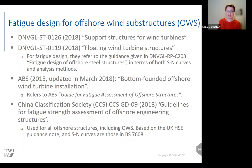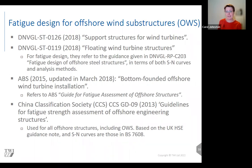There are several DNV design documents covering support structures and floating structures, and those documents refer to the fatigue design guidance in DNV RP C203 for both the SN curves and analysis methods. The ABS document for offshore wind structures refers to the ABS guide for fatigue assessment of offshore structures. The China Classification Society document is based on the UK's Health and Safety Executive HSE guidance notes, which use the same SN curves as British Standard BS 7608. The fatigue design guidance for offshore wind substructures therefore refers back to these other documents, and I'll now explain the origins of the guidance in those documents.